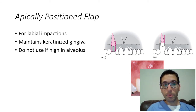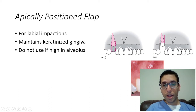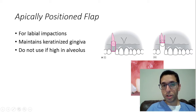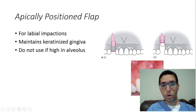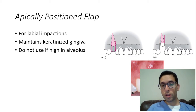The apically repositioned flap is considered for labial impactions when you want to maintain the keratinized gingiva and the tooth is not too high in the alveolus. It's labial, not super high, and you have good keratinized tissue. You flap it and suture the flap in an apically repositioned position — similar to a frenectomy or vestibuloplasty. The keratinized tissue is secured up to the crown CEJ, and it's going to adhere to the tooth. As the tooth is dragged down, the tissue comes with it, resulting in no periodontal defect.